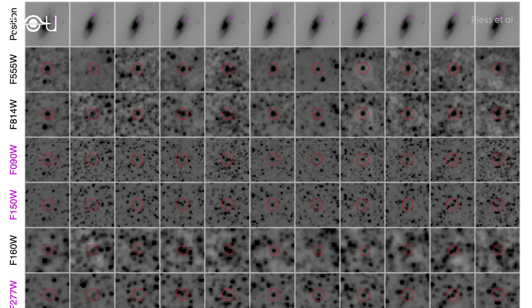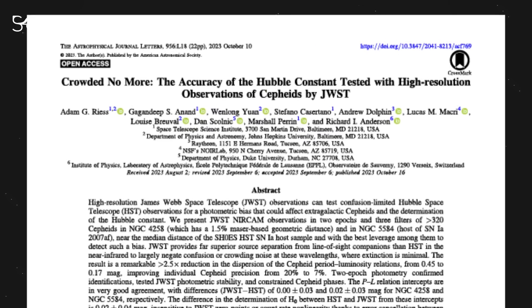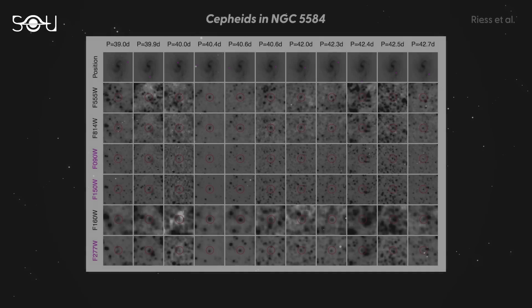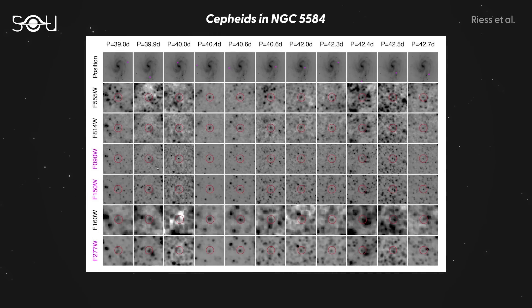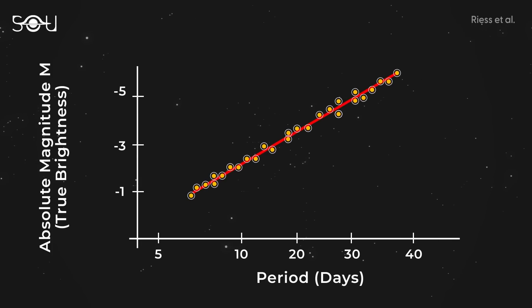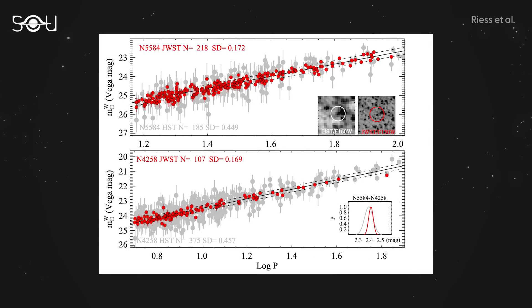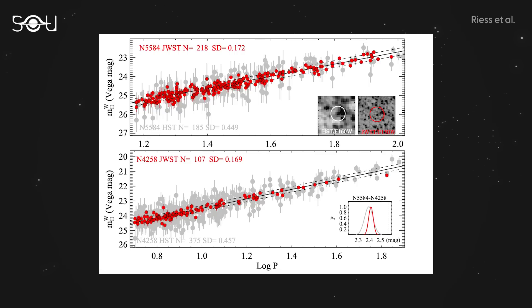The Hubble images appear crowded, while the Webb images, thanks to their higher resolution, are comparatively less so. The distinction is the primary reason the research paper on this study is aptly titled 'Crowded No More.' Similarly, image patches from both telescopes found in NGC 5584 are displayed for all Cepheid with periods ranging from 39 to 43 days, indicative of brighter Cepheid. Using these observations, the period-magnitude relation was established for both galaxies. The data points highlighted in red are derived from the Webb filter, whereas the grey dots represent observations from the Hubble Space Telescope filter. This comparison shows that the red data points follow the same trend as the grey ones, but there is a noticeable reduction in the standard deviation for both galaxies — a lower standard deviation indicates reduced error, a trend clearly observed in the Webb data points.